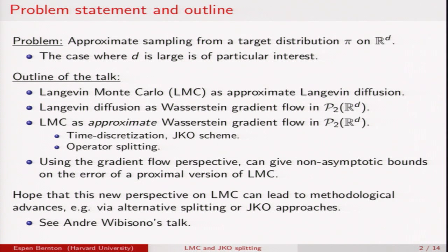Then we'll see that Langevin diffusion via the Fokker-Planck equation can be seen as a gradient flow in the space of probability distributions metrised by the Wasserstein distance. In turn that allows us to see Langevin Monte Carlo as an approximate Wasserstein gradient flow where the approximation comes from time discretizations with connections to the JKO scheme and the operator splitting approach to solving the Fokker-Planck equation.